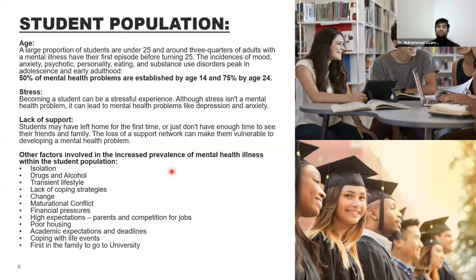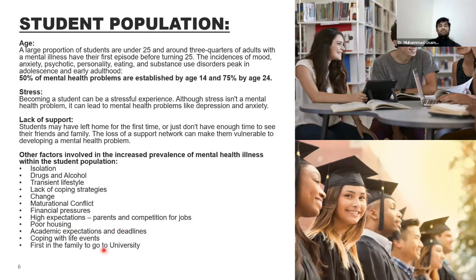Other factors in the prevalence of mental health issues within the student population include: isolation, drugs and alcohol, a transient lifestyle, lack of coping strategies, maturational conflicts, financial pressures, high parental expectations, competition for jobs, poor housing, academic expectations and deadlines, coping with life events, and being the first in the family to attend university.